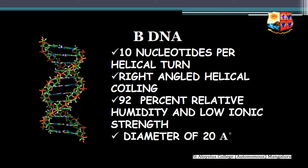The first type is B-DNA. It is a right-handed helical coiling DNA, also called the Watson and Crick model DNA. It is the biologically important form of DNA, commonly and naturally found in almost all living systems. B-DNA is found at very high relative humidity and low ionic strength. It has 10 base residues per turn with a diameter of 20 angstrom.